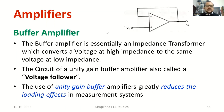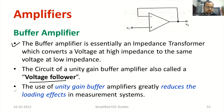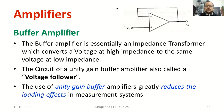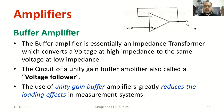Buffer amplifier — it is also known as a voltage follower. Whatever the output voltage, it follows the input. Buffer amplifier is essentially used as an impedance transformer, which converts a voltage at high impedance to the same voltage at low impedance. The gain will be unity; the ratio of output to input equals one. The use of unity-gain buffer amplifiers greatly reduces the loading effect for the measurement system. In the circuit, the non-inverting terminal takes the input, and the inverting terminal is directly connected to the output, so V0/V1 equals 1.